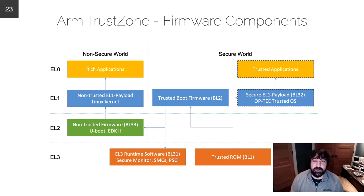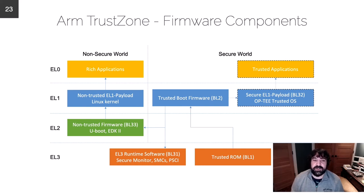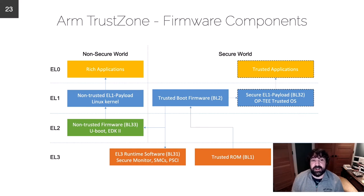Here you can see a more typical implementation of ARM TrustZone diagramming out reference implementations, including the trusted boot firmware and OP-TEE trusted OS that ARM provides. Several stages of bootloaders are shown: the trusted ROM passes to the trusted boot firmware, which passes to runtime software and the secure monitor, and finally to non-trusted firmware such as U-Boot or EDK2, which boots a kernel — possibly Linux — running rich applications, while OP-TEE runs in the secure world loading secure trusted applications completely separate from non-secure rich applications.